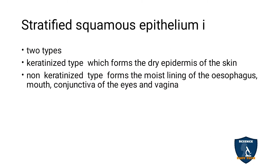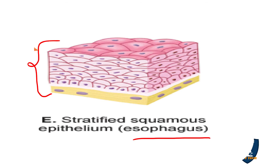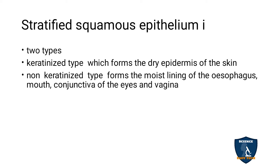Stratified squamous epithelial tissue is of two types: keratinized and non-keratinized. The keratinized type refers to the dry epidermis of the skin — the upper surface of skin, nails, and hair. The non-keratinized type is moist and is seen in the esophagus, mouth, conjunctiva of the eyes, and the vagina.